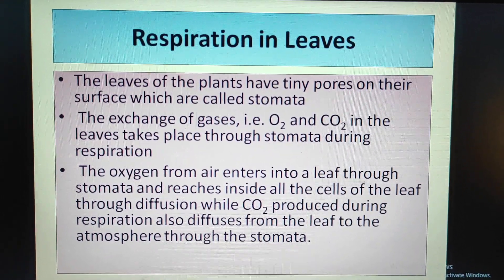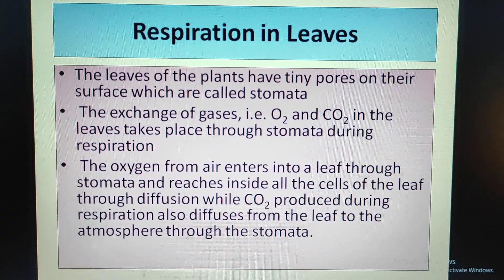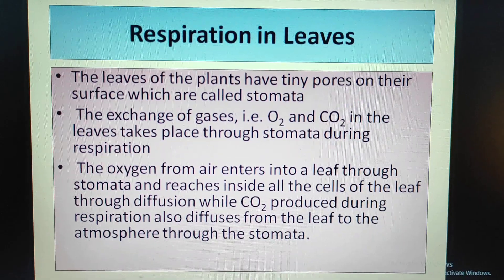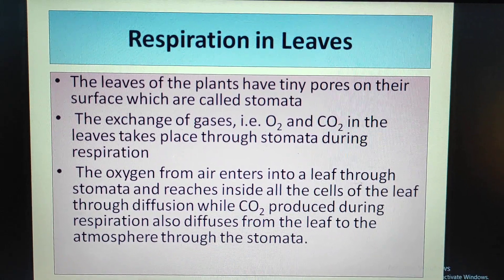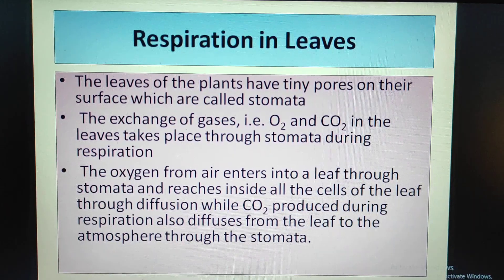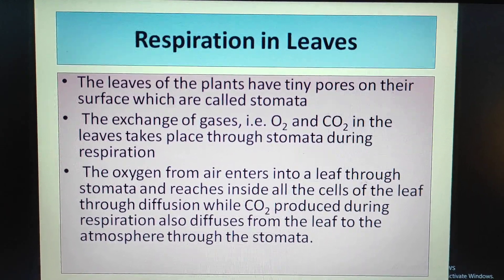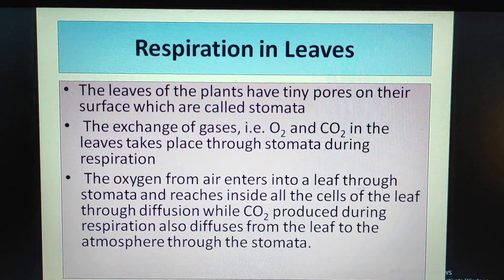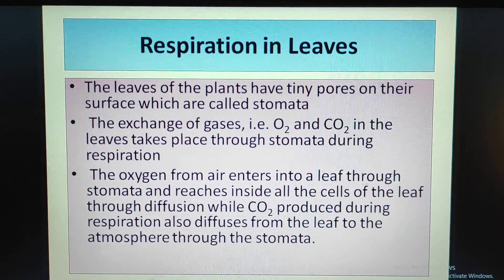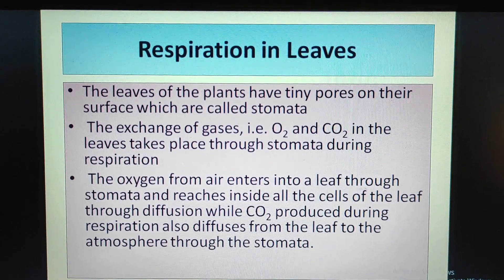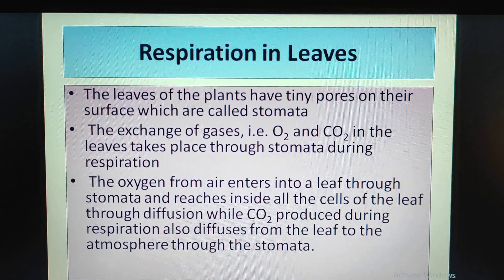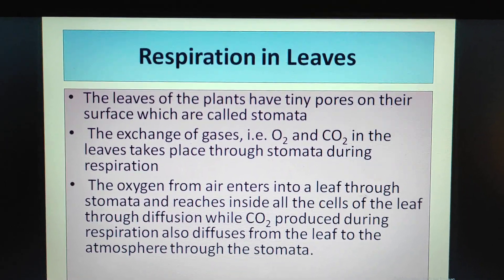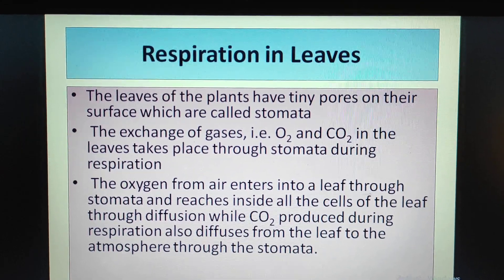Respiration in leaves. The leaves of the plant have tiny pores on their surface which are called stomata. The exchange of gases — that is oxygen and carbon dioxide in the leaves — takes place through stomata during respiration. Oxygen from the air enters into a leaf through stomata and reaches all the cells of the leaf through diffusion, while carbon dioxide produced during respiration also diffuses from the leaf to the atmosphere through the stomata.